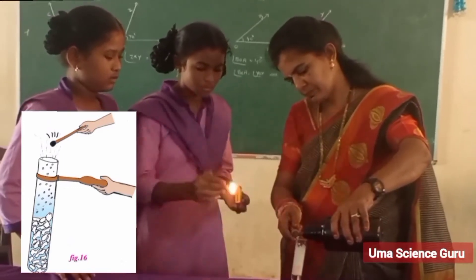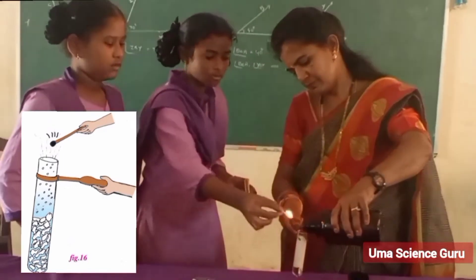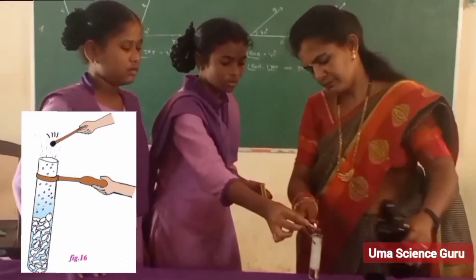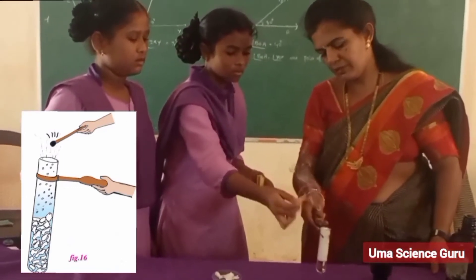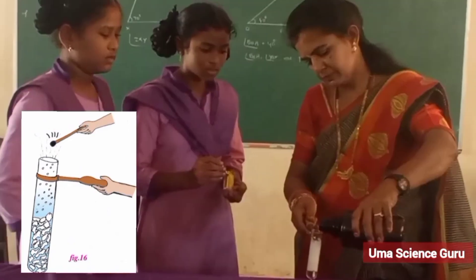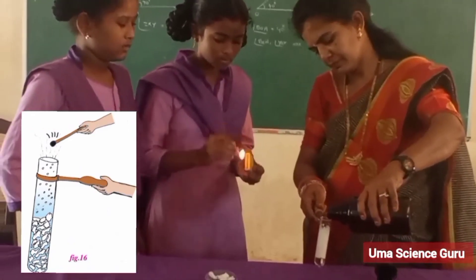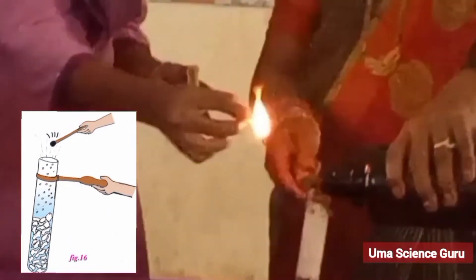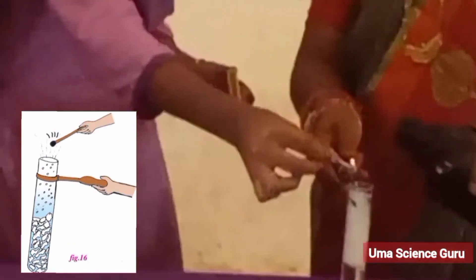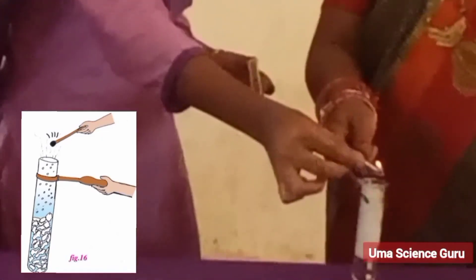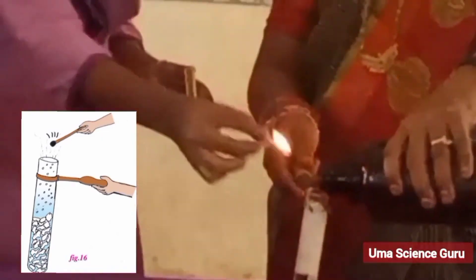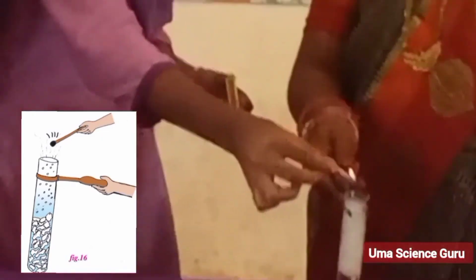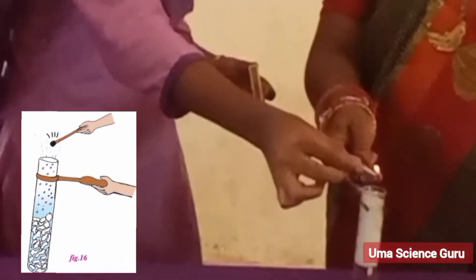Students, do you observe any gas released in this reaction? Bring a burning matchstick near the mouth of the test tube. What happened? The gas that put out the burning matchstick is carbon dioxide.